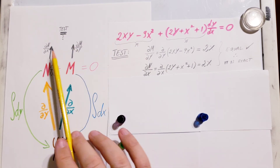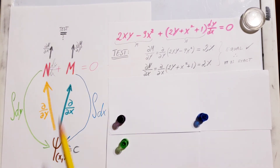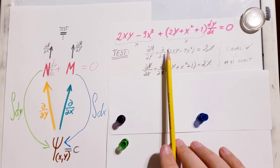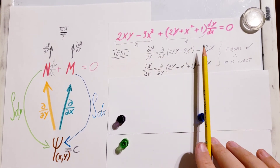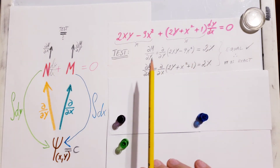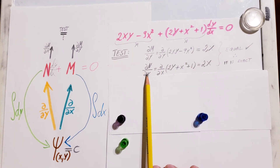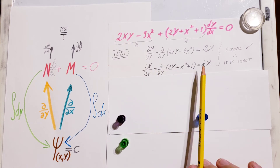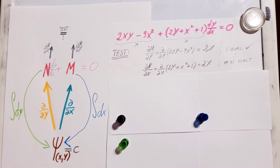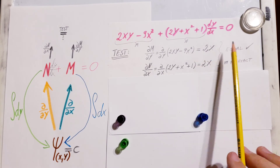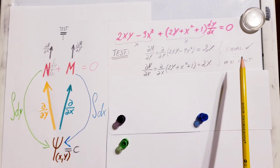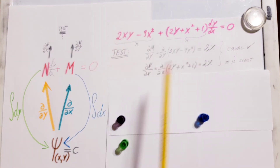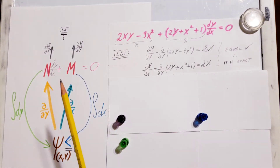Let's perform the test. The partial with respect to y of M gives us 2x. The partial with respect to x of N also gives us 2x. Since these two are equal, we are good — this problem is exact and we can continue solving it by this method. If they are not equal, you'll have to solve it by different methods.